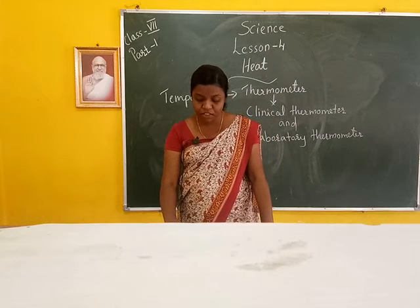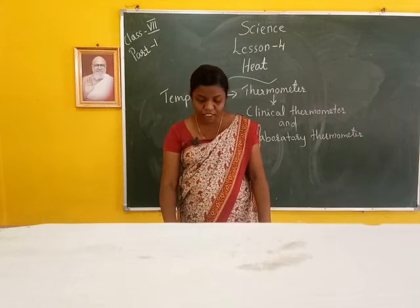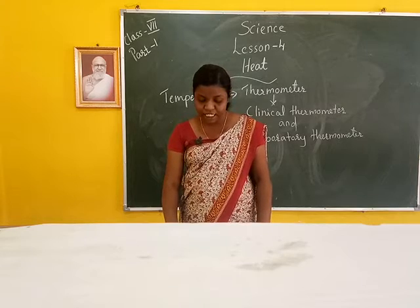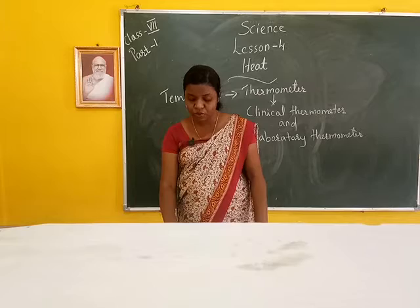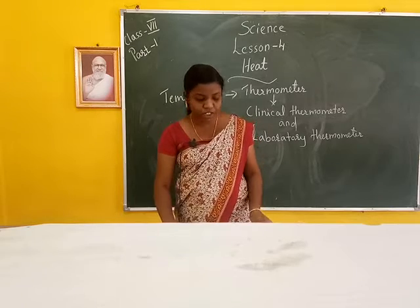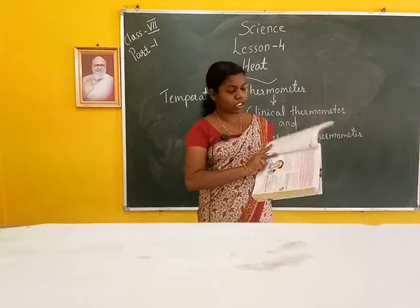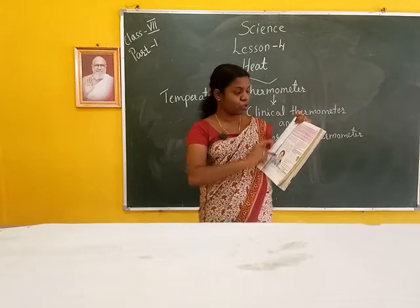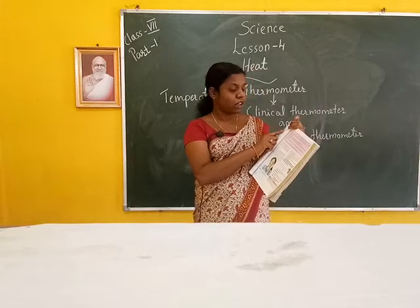This thermometer consists of a long glass tube, thick and uniform. There is a bulb at one end of the glass tube which contains mercury. Refer to figure 4.2 — this is the picture of a clinical thermometer.